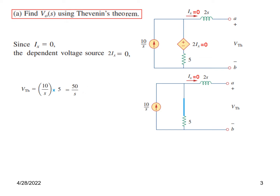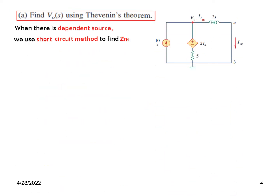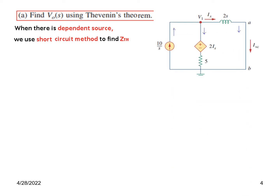Now we need to find Z_Thevenin. For a circuit with dependent sources, the easiest method is to short-circuit the output terminals without changing any other parameter, find the short-circuit current isc, and then Z_Thevenin equals V_Thevenin divided by isc. We mark the currents: one entering and two leaving. The nodal equation at this node gives: 10 over S, minus (v1 minus 2ix) divided by 5, minus v1 divided by 2S equals 0.